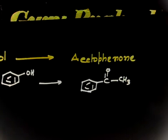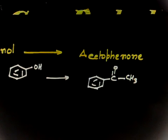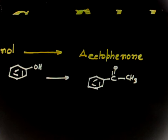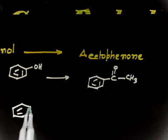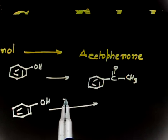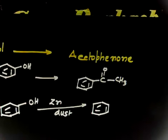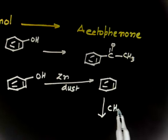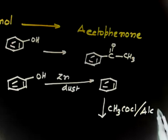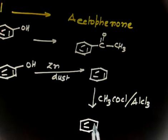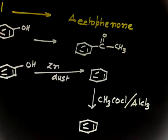How will you convert phenol to acetophenone? This reaction is quite interesting. If phenol is treated with zinc dust, the OH group is removed and you get benzene. Now if you treat benzene with CH₃COCl in the presence of AlCl₃ — that is Friedel-Crafts acylation — you will have a CH₃CO⁺ electrophile acting on the benzene ring.